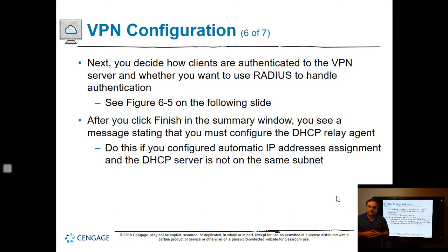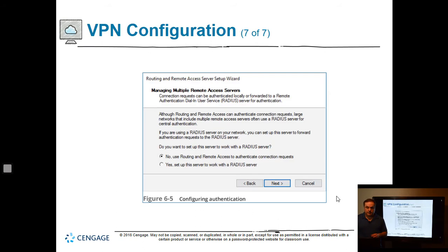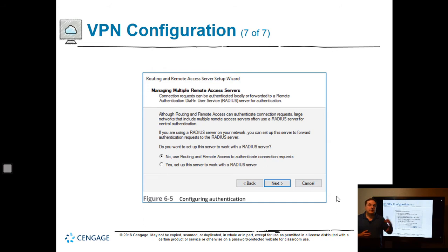For client authentication, you can use Active Directory or a RADIUS server. RADIUS has been around for a long time, is very secure, can integrate with Active Directory, and adds extra security plus certificate support. After clicking Finish, you'll see a message about configuring a DHCP relay agent — required if you configured automatic IP addressing and the DHCP server is not on the same subnet. The simplest approach is using routing and remote access to authenticate directly against Active Directory, though RADIUS provides an additional security layer.